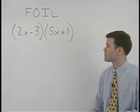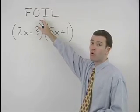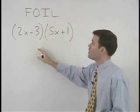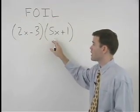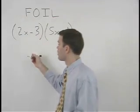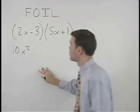To multiply these two binomials together, let's use the FOIL method. The product of the first terms is 2x times 5x, or 10x squared, plus the